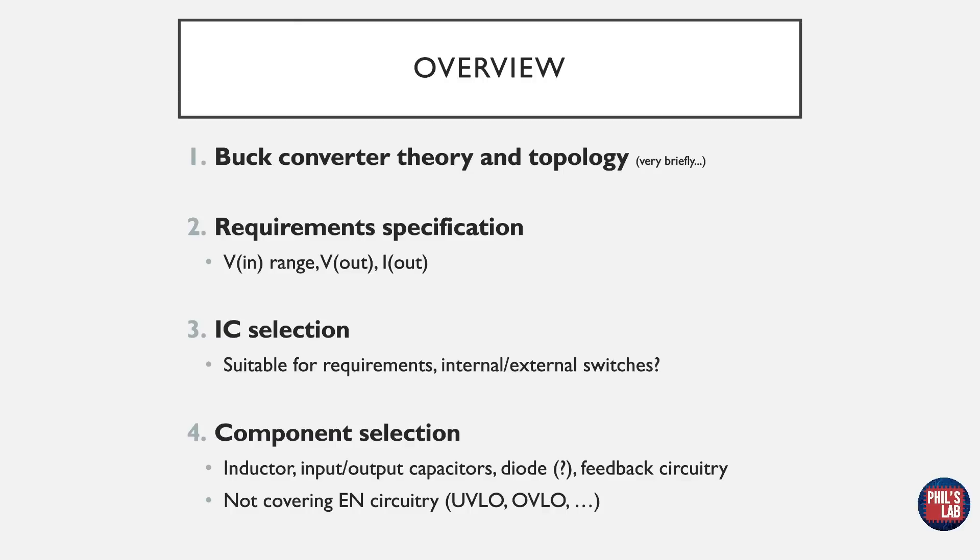I've covered this more in detail in other videos and I'll leave a link in the description below. Then we'll look at requirement specification. For a specific application we might have a certain input voltage range, a required output voltage and required load current. These specifications will then lead us to choosing an IC. This has to be suitable for the requirements. It may contain internal or external switches, diodes and other circuitry, and we'll look at some distributors to see what options there are.